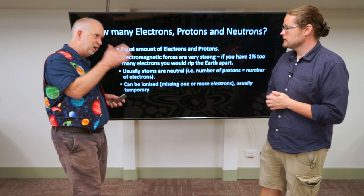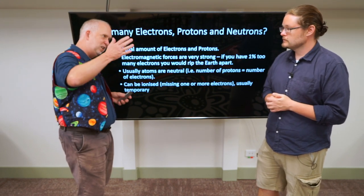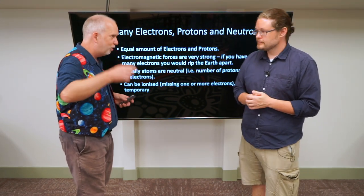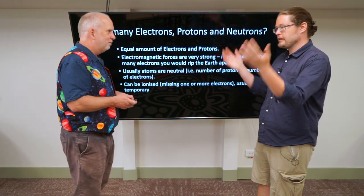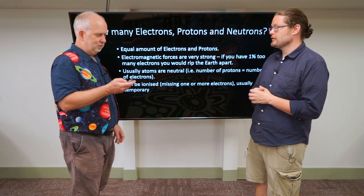So that means when you've got something like hydrogen with one electron, it must have one proton. Helium with two electrons must have two protons. Iron, 26 protons, 26 electrons, and so on.